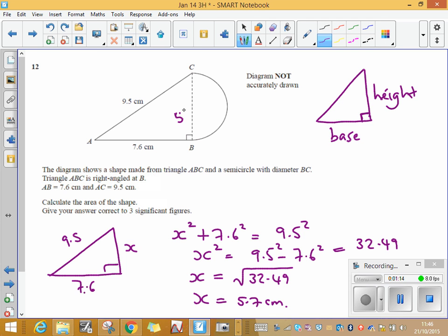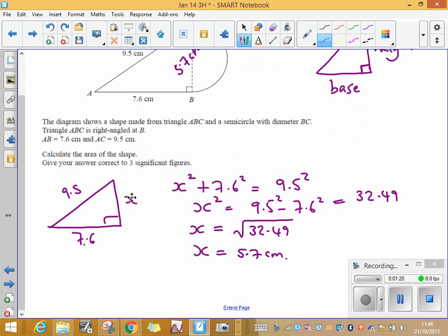So this length here is 5.7 centimetres. Now to find the area of my triangle, I now know that this is 5.7 so the area of the triangle is going to be a half times the base which is 7.6 times the height which is 5.7 and that comes out as 21.66 centimetres squared.